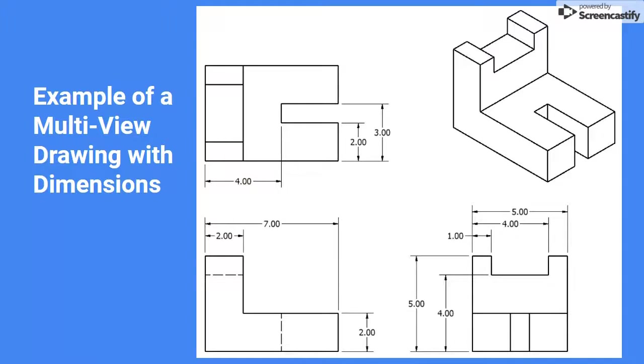This example shows the front, top, and right side views with dimensions added. Dimensions are notes indicating the measurements of the object that manufacturers need to make the part the correct size and shape. We'll talk a lot more about dimensions later. This drawing also includes a 3D isometric view to help make sense of the three 2D views, but this extra view isn't always needed.